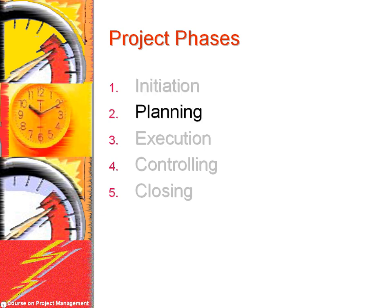In the planning phase, decisions are made about what should be done and when various activities should be done. Execution and controlling generally occur together. In the execution phase, the project team tries to do what was planned. In the controlling phase, the project manager measures the project's accomplishments and compares them to expectations.